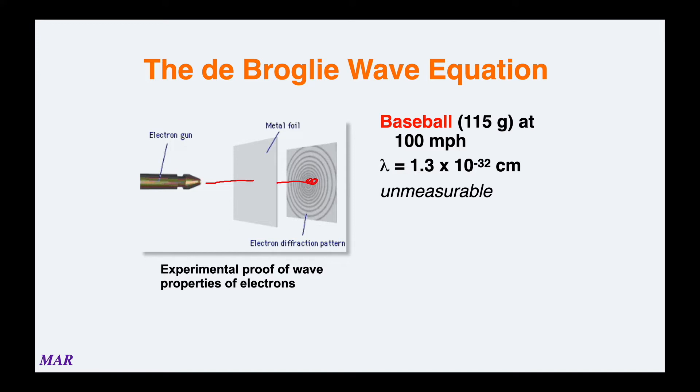Use λ = h/mv, turn grams into kilograms, miles per hour into meters per second. You end up with a wavelength of 1.3 × 10⁻³² centimeters, an unmeasurable quantity by current technology. We couldn't measure a baseball's wavelength, it's too massive and too slow. If you see me walking in Safeway, you won't see any wavelength associated with it.